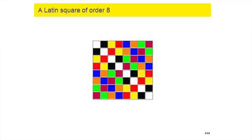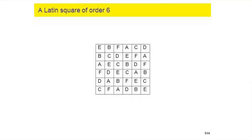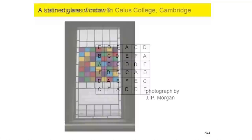There is another Latin square of order six, this time with just six letters A, B, C, D, E, F. Unless I've made a terrible mistake, in each row you've got all six letters and in each column you've got all six letters. I was quite interested that the talk before this showed a stained glass window.